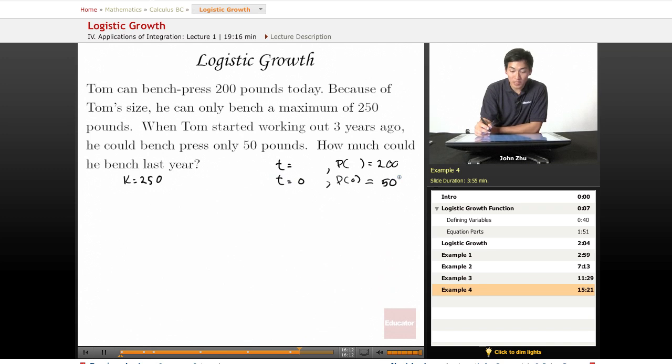So how much could he bench last year? So we're looking for a t equals value. Well, if he started working out three years ago, that means our t value here is going to be 3. And for how much he could bench last year is going to be 2. So p of 3 equals 200. What is p of 2?